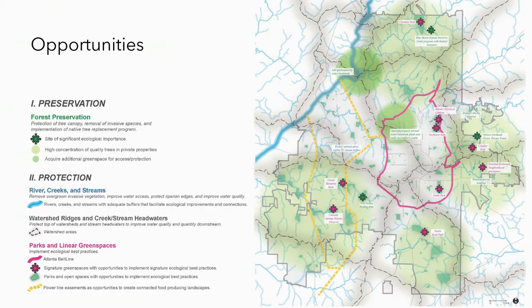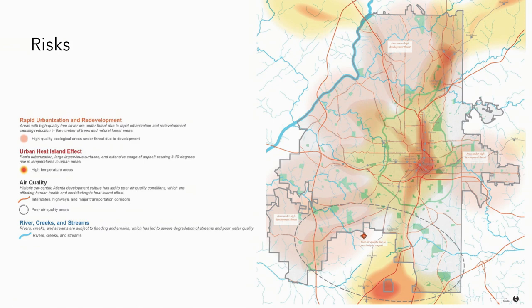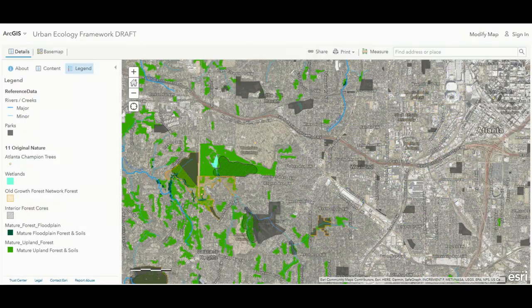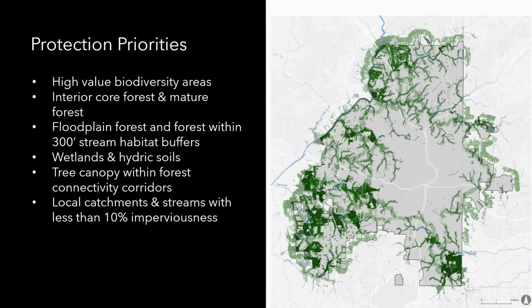Through numerous public workshops, we produced summary maps of opportunities and risks throughout the city and a first-pass draft community vision for what a new green network might look like. The analysis was also presented in web maps so people could look up their neighborhood and home to understand how they fit into the analysis — and so understand how to engage it into action and plant the seeds for future change.